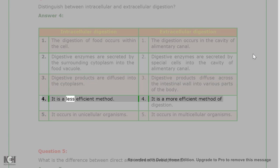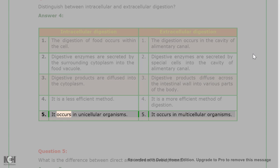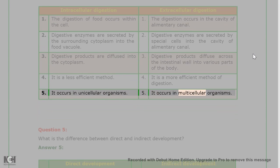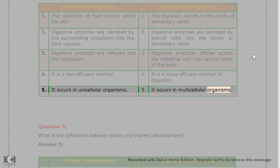4. It is a less efficient method. 4. It is a more efficient method of digestion. 5. It occurs in unicellular organisms. 5. It occurs in multicellular organisms.